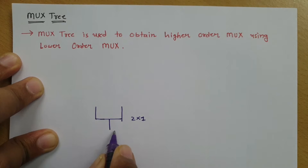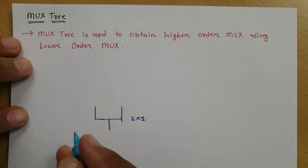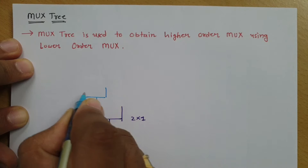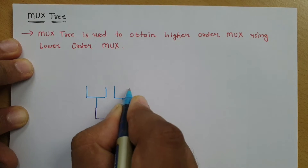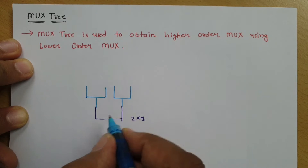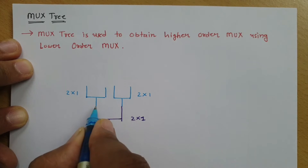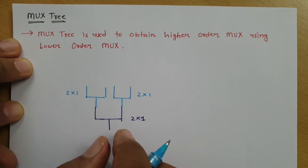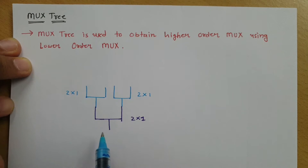So here we have one output and we have two inputs. Now, if I further connect this multiplexer with another two 2×1 multiplexers, where each of those is also 2×1 — two inputs and one output — then the resultant of this is having 4 inputs and one output.